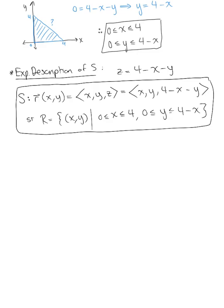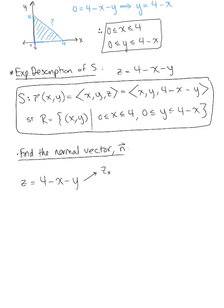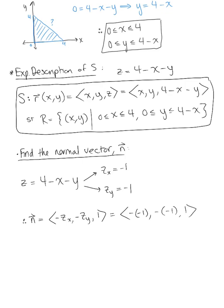Using the explicit description to find the normal vector: since z = 4 - x - y, the partial derivative of z with respect to x is -1, and the partial derivative of z with respect to y is also -1. Therefore the components of our normal vector are (-∂z/∂x, -∂z/∂y, 1) = (-(-1), -(-1), 1) = (1, 1, 1). This confirms the normal vectors are pointing in the positive z direction.